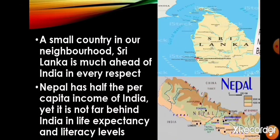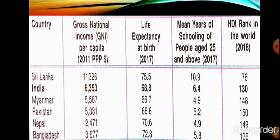Nepal has half the per capita income of India, yet it is not far behind India in life expectancy and literacy levels. If you look at the table, Nepal, which has half the per capita income of India, is not far behind India in life expectancy and literacy levels.